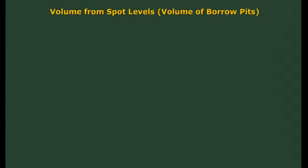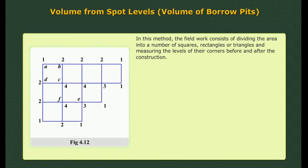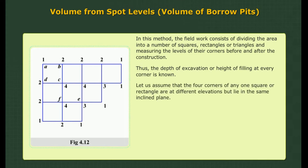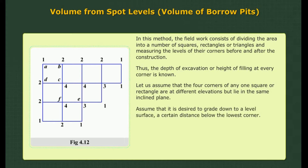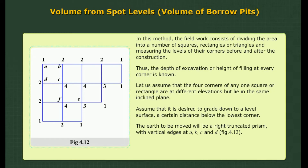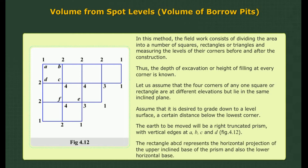Measurement of volume from spot levels: In this method, the fieldwork consists of dividing the area into a number of squares, rectangles or triangles and measuring the levels of their corners before and after the construction. Thus the depth of excavation or height of filling at every corner is known. Assume that the four corners of any one square or rectangle are at different elevations but lie in the same inclined plane, and it is desired to grade down to a level surface a certain distance below the lowest corner. The earth to be moved will be a right truncated prism with vertical edges at A, B, C and D.